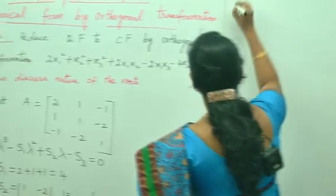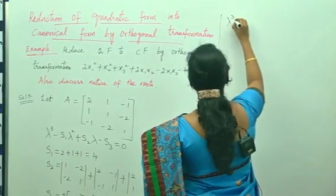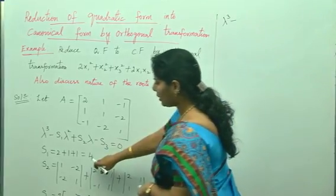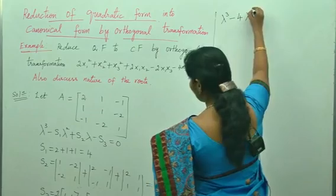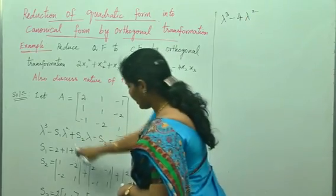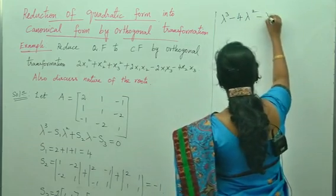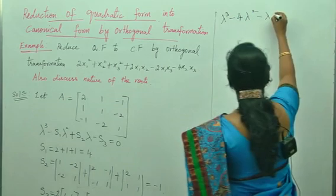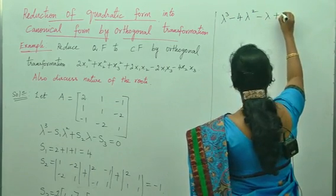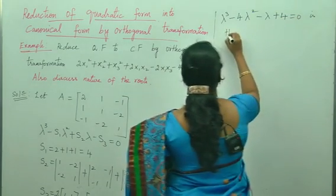From this we frame the characteristic equation. What is it? Lambda cubed minus s1 lambda squared plus s2 lambda minus s3 equals 0, which gives lambda cubed minus 4 lambda squared minus lambda plus 4 equals 0. This is the characteristic equation.